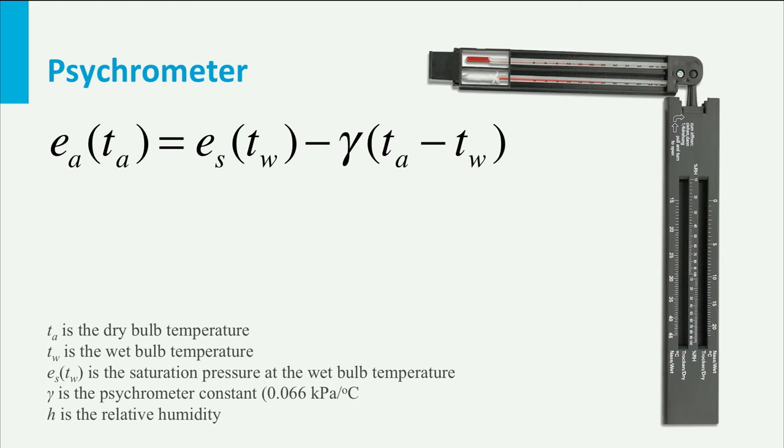This process can be demonstrated by the psychrometer, which has a wet and dry bulb thermometer. We need the psychrometric constant gamma to be able to calculate the actual vapour pressure and hence the relative humidity.